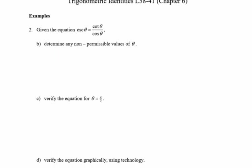Here are our reciprocal identities that we've talked about already — those should look familiar. And then quotient identities: remember, tan θ equals sine θ over cos θ, which is the same as y over x on the unit circle. And cotangent is just the reciprocal — flipped upside down. So the given equation is: cosecant θ equals cotangent θ over cos θ. We need to determine the non-permissible values of θ.